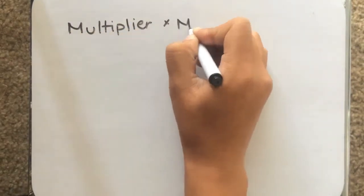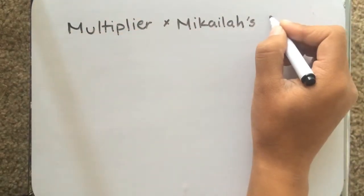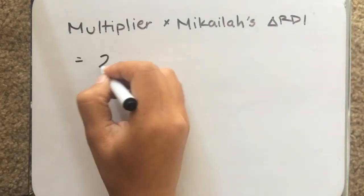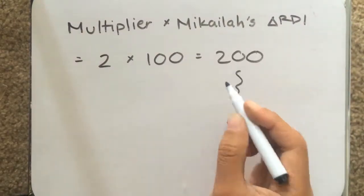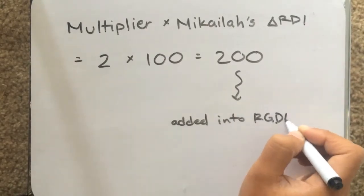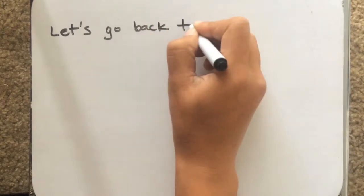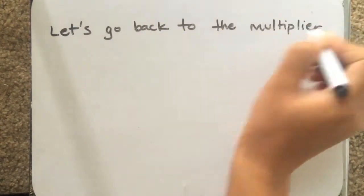Well, if we were to continue that cycle, Michaela's $100 tip times the multiplier would equal 200. That means that $200 were put into the economy. Let's look at this in more detail.